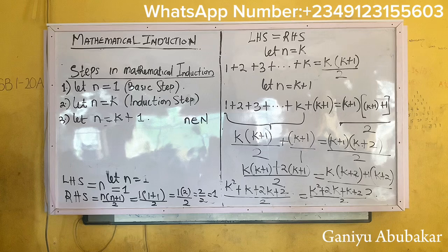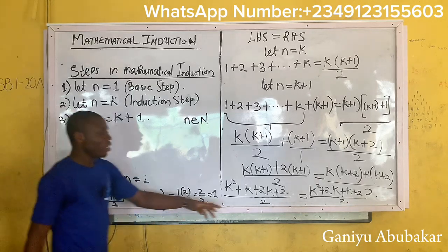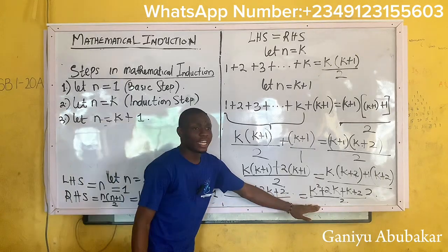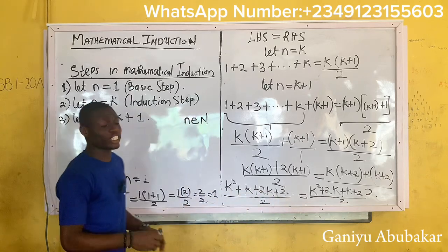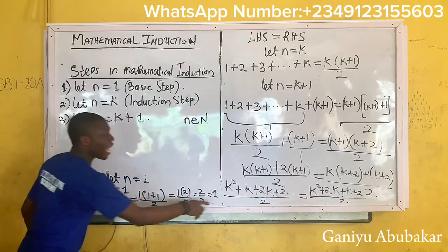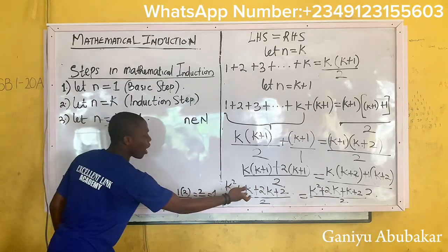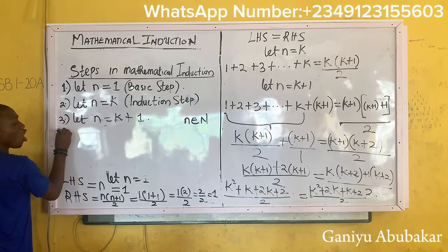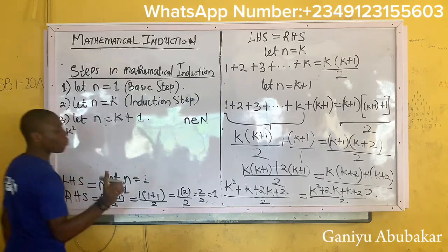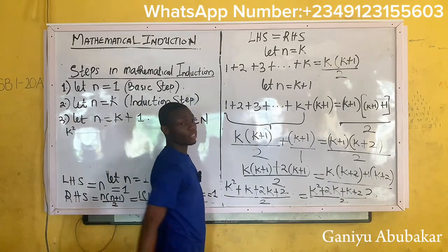At this point, combining like terms: I have k squared, and k plus two k gives three k, plus two, over two.